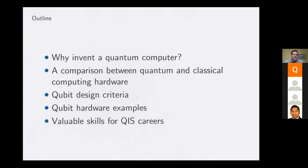Here's my outline. We'll start with a teaser of why invent a quantum computer, just to ground the conversation. Then I'll do a comparison between classical computing hardware and quantum computing hardware, realizing they're related — quantum computing can be thought of as an evolution of classical computing. Then we'll look at design criteria, hardware examples from trapped ions and NV centers to phosphorus donors, silicon germanium qubits, and superconducting circuits. And lastly, I'll touch on some of the skills useful in a QIS career.